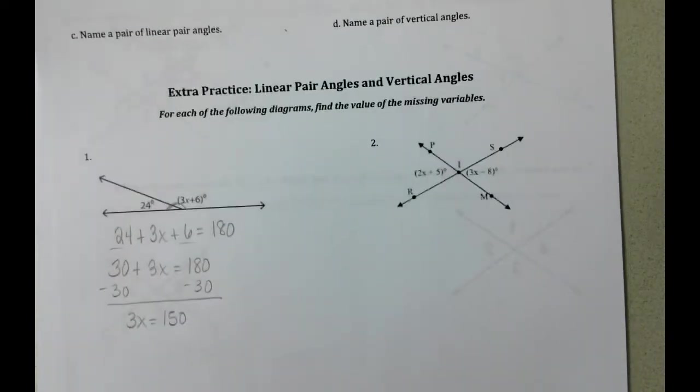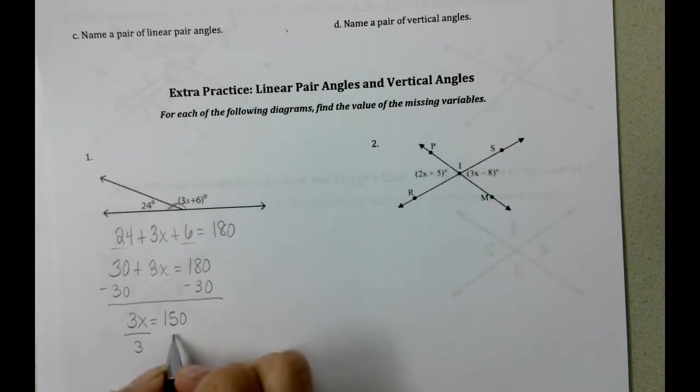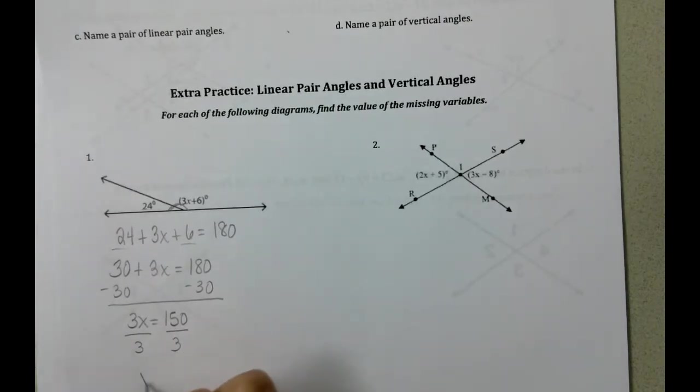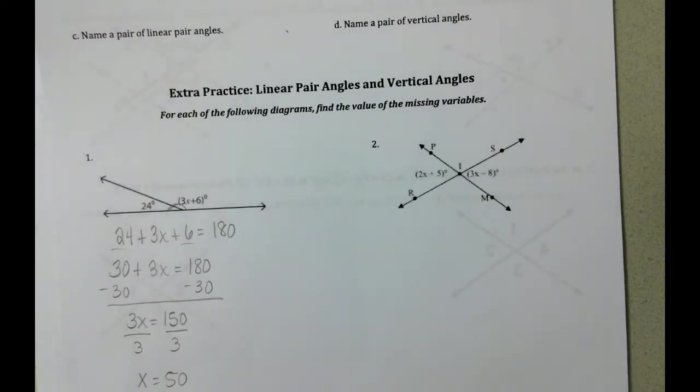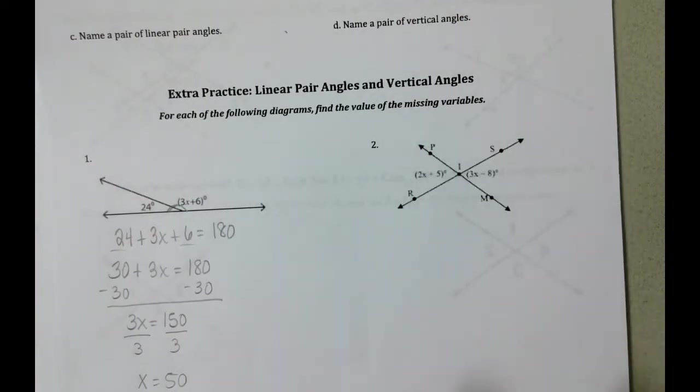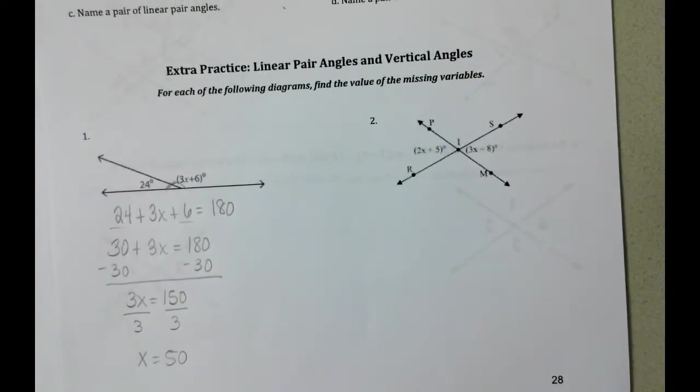And finally, what we want to do is we want to divide both sides by 3 and get x equals 50. Do not hesitate to use decimals if you need decimals to help you to simplify something.